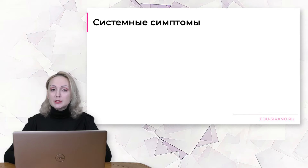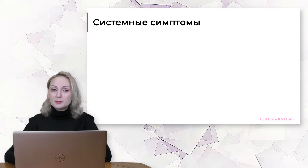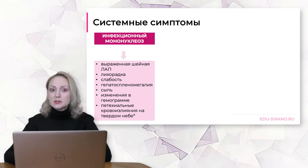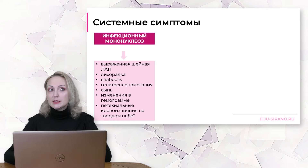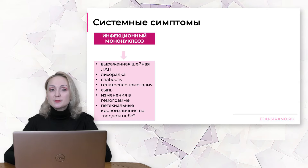После физикального осмотра важно обратить внимание на системные симптомы. Для инфекционного мононуклеоза характерны лихорадка, слабость, гепатомегалия, сыпь и, конечно, изменения в гемограмме – то есть появление атипичных мononуклеаров.